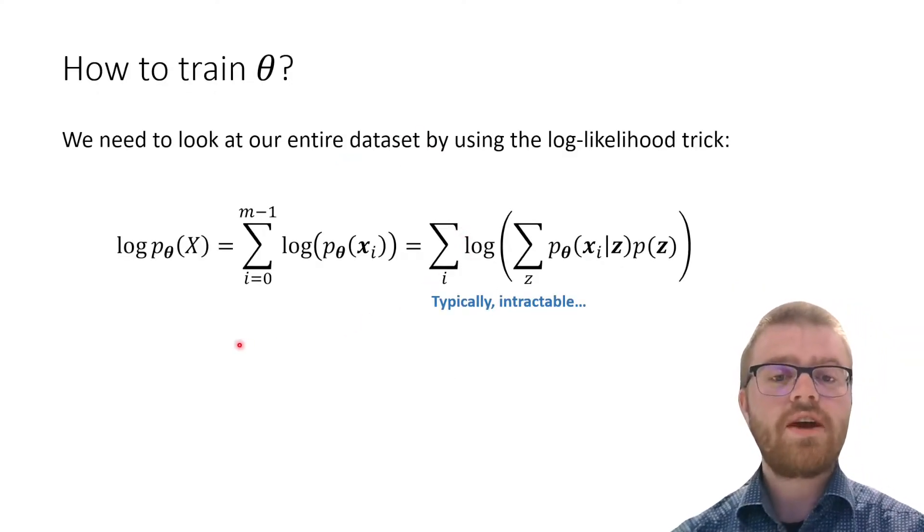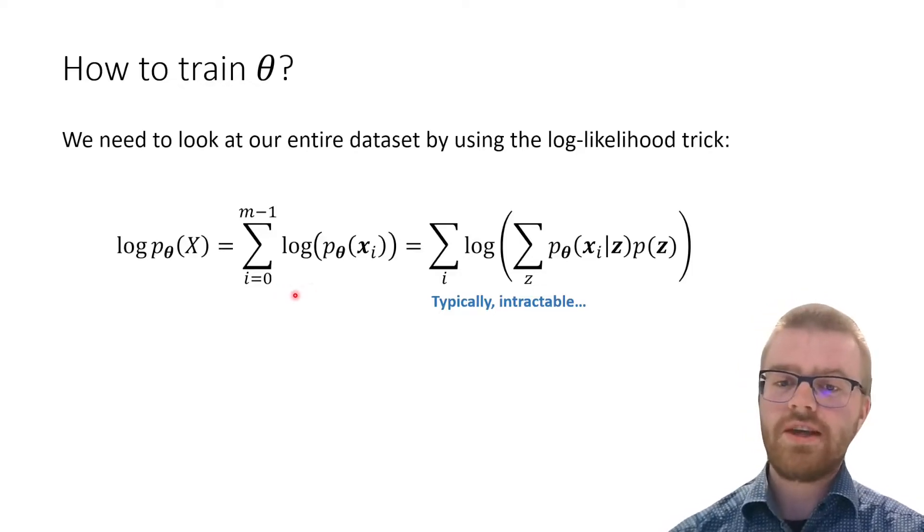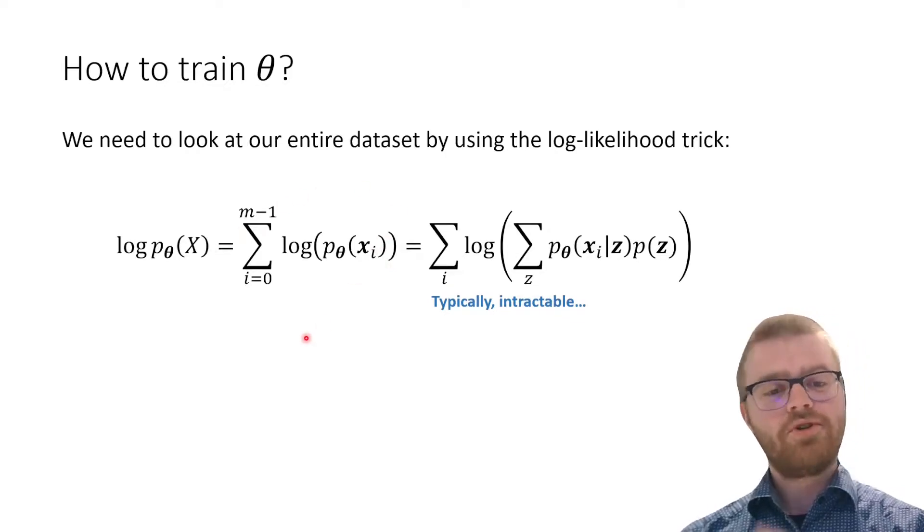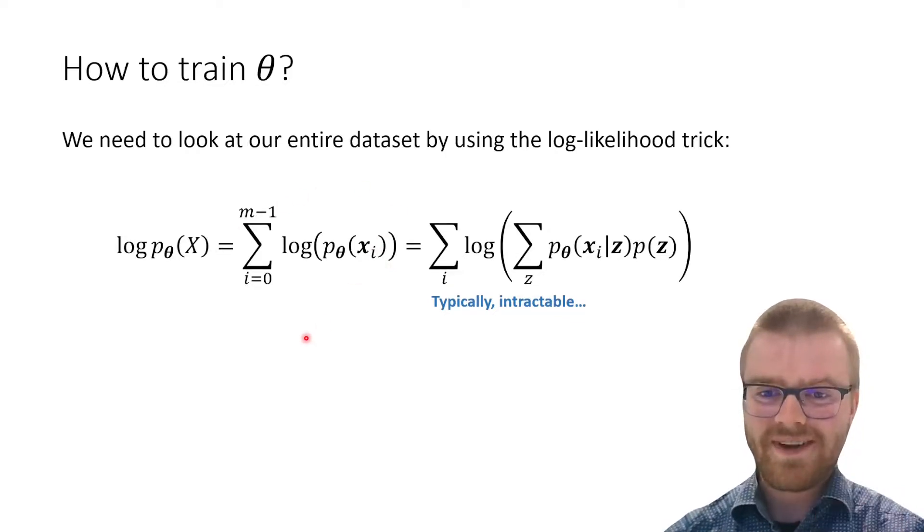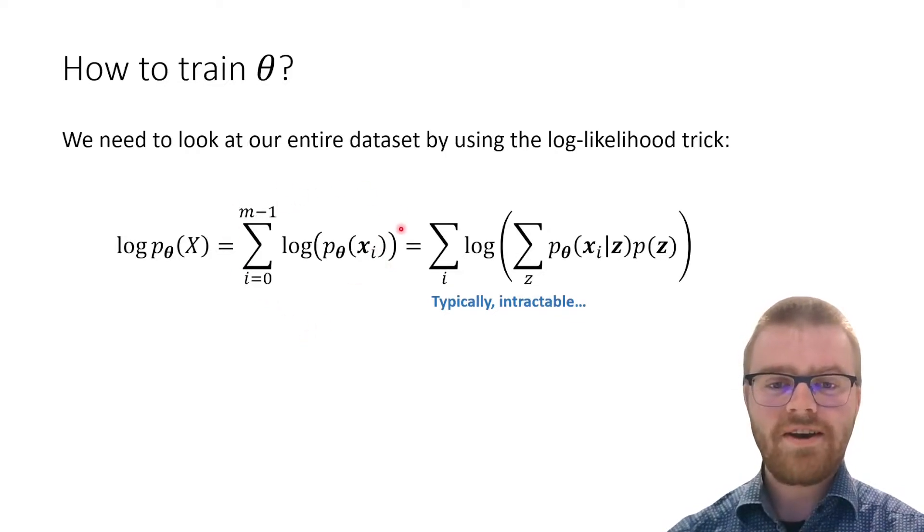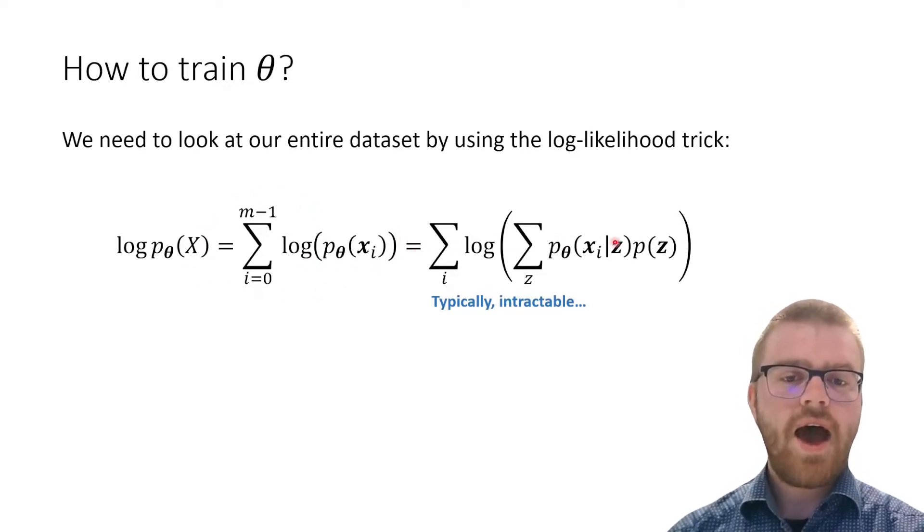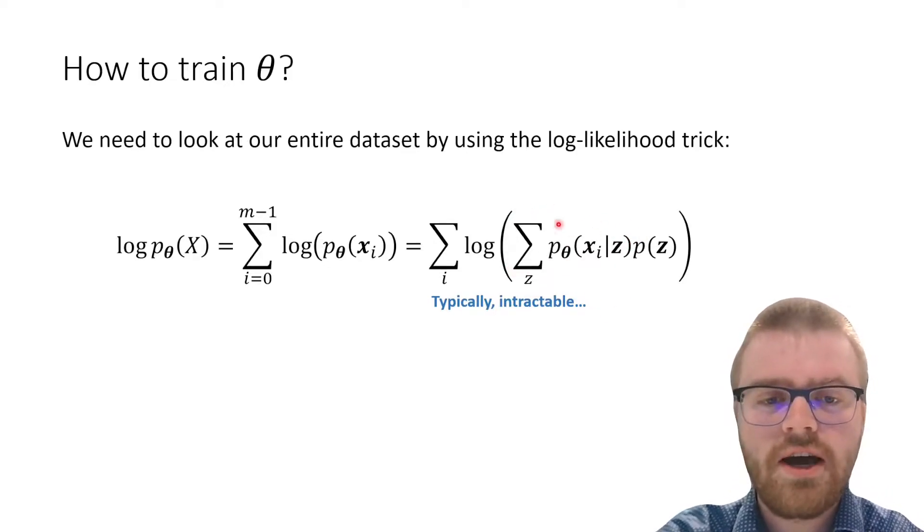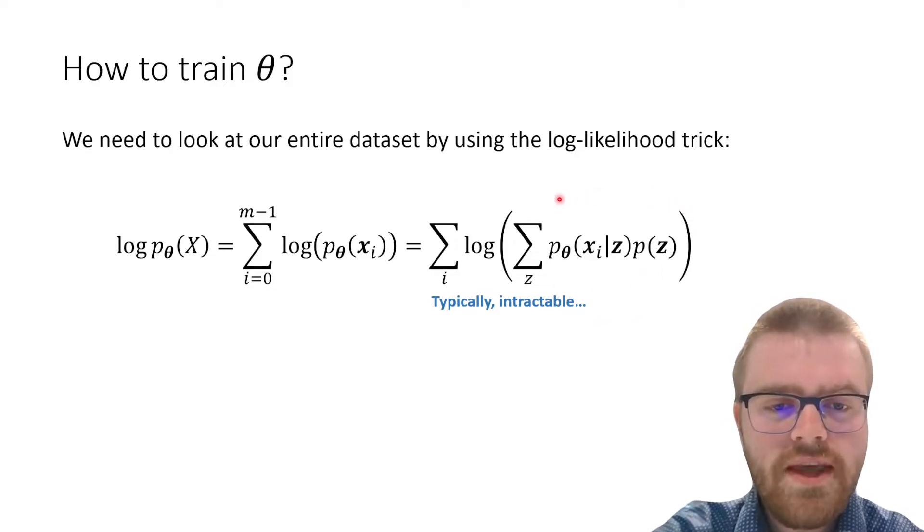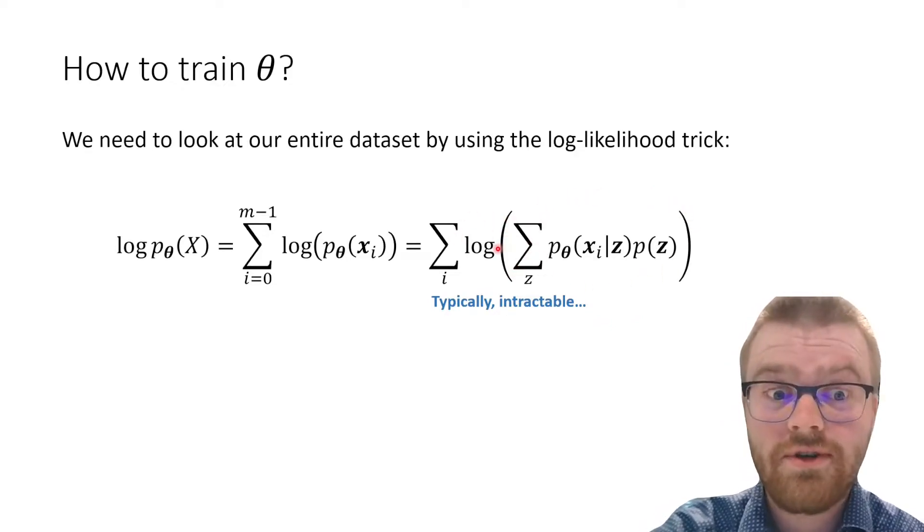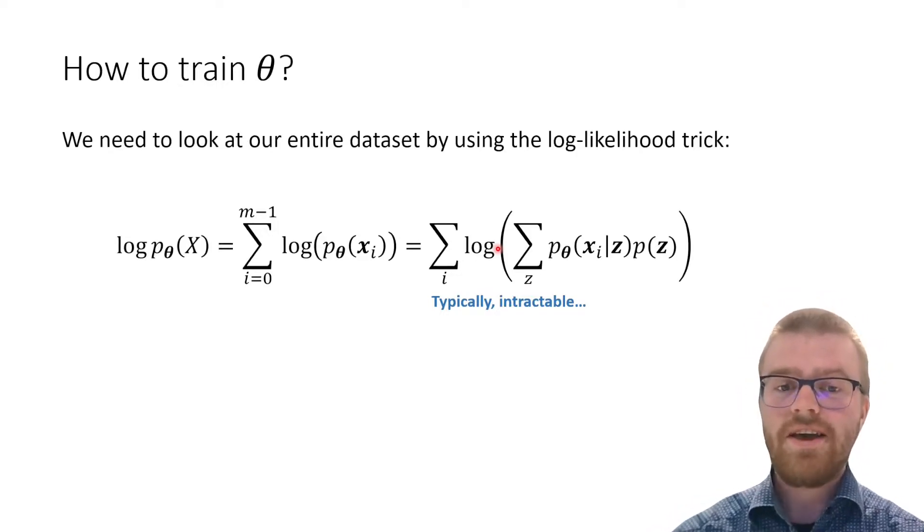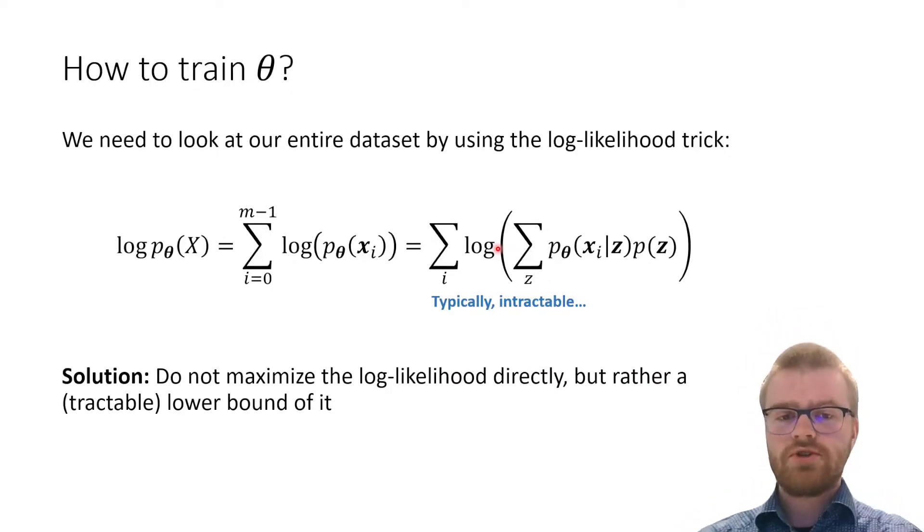We need to look at our entire dataset and not just a data point, and we make use of the log likelihood trick to change multiplication into addition. So we sum over entire dataset and then we have the log likelihood. However, now we run into a problem because we have introduced this marginalization over z. This summation is now inside of our logarithm, which brings big problems. This is typically intractable.